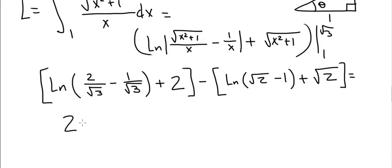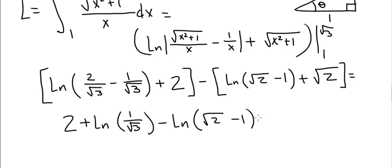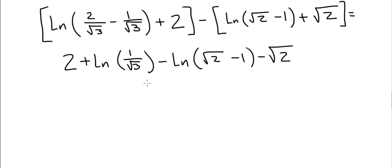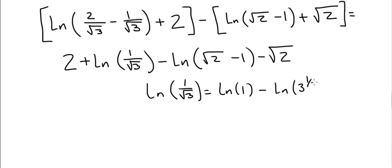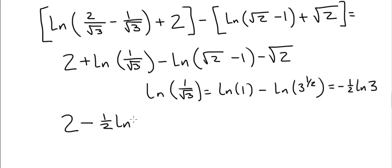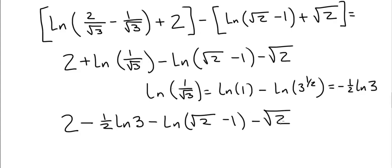From the first part we have 2 + ln(1/√3), minus the ln(√2 − 1) minus √2. We simplify ln(1/√3) = ln(1) − ln(3^(1/2)) = 0 − (1/2)ln(3) = −(1/2)ln(3). So the final answer is 2 − (1/2)ln(3) − ln(√2 − 1) − √2. You can put that into a calculator to get the final numerical value.